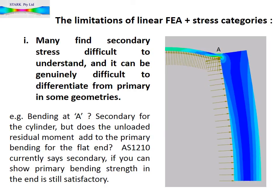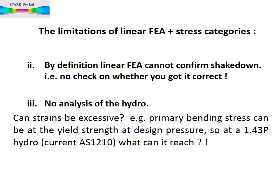The linear FEA stress category approach has limitations and difficulties in its application. Many have difficulty in understanding the concept of secondary stress, but it can be genuinely difficult to differentiate secondary from primary in some geometries. For example, bending in the cylinder at the junction with a flat end, as discussed earlier, has had its classification in standards fluctuate between primary and secondary over time. By definition, linear FEA cannot confirm shakedown to elastic action, and thus cannot confirm, or otherwise, whether the classification of a particular component's stress as secondary was the correct classification.